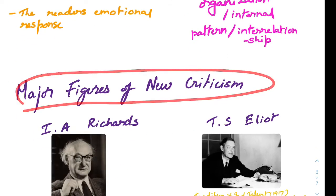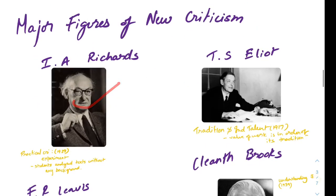Major figures for new criticism are I.A. Richards, who wrote Practical Criticism in 1929. It's a book containing the results of experiments he conducted on students — he asked students to analyze texts without any background. What he found was that if the text was good, you don't really need to know all the other things. The text alone works as a standalone if it's good.